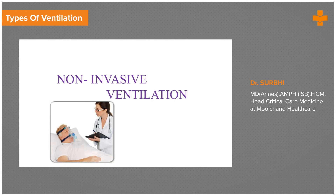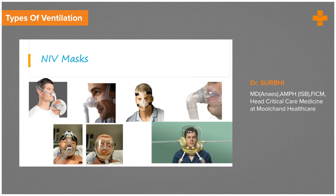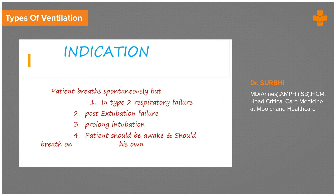Besides invasive ventilators, we also have non-invasive ventilators where a tight-fitting mask is placed on the patient's face and support is provided. There are two types: CPAP and BiPAP. In CPAP, a single pressure is applied throughout the cycle to keep the airway open. In BiPAP, a baseline pressure is applied to the airway plus a pressure support is given with every breath. Indications include Type 2 respiratory failure when the patient is not breathing enough, or post-extubation failure. For NIV, the patient should be absolutely awake, breathing on their own, and should not have significant facial trauma so the mask fits well.